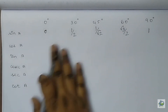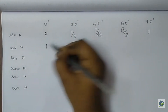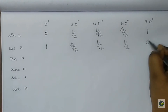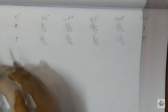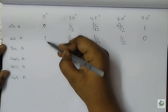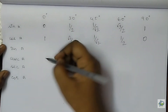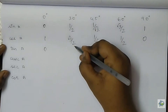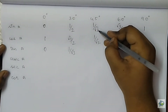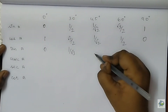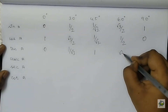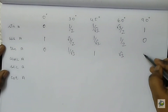Cos A is the reverse of sin A, so we fill it in reverse order: 1, √3/2, 1/√2, 1/2, and 0. Now for tan A, we know tan A is sin A by cos A, so we divide sin A by cos A for each angle. This gives: 0/1 = 0; (1/2)÷(√3/2) = 1/√3; (1/√2)÷(1/√2) = 1; (√3/2)÷(1/2) = √3; and 1/0 which is not defined.